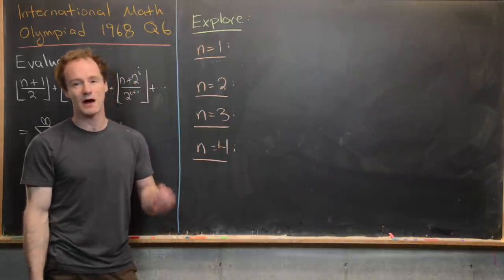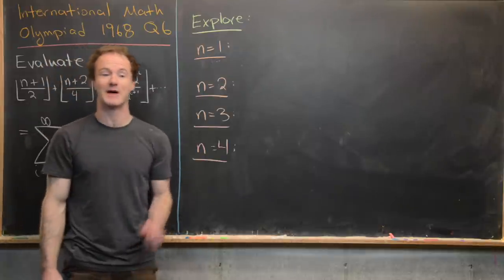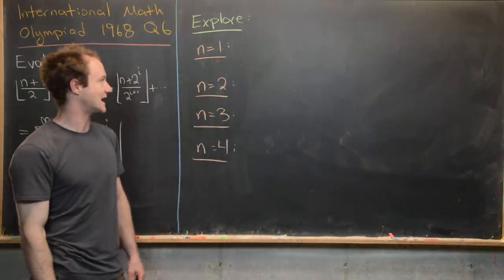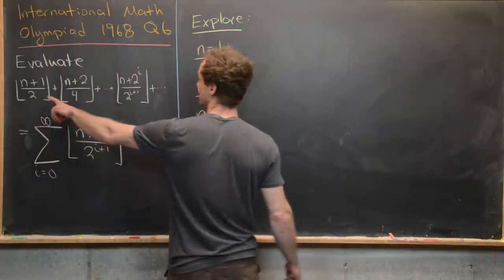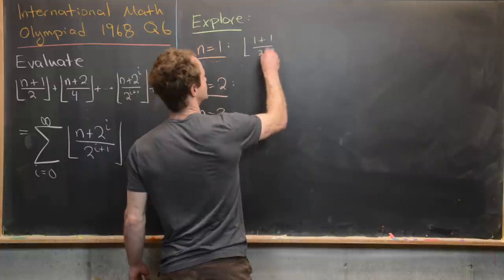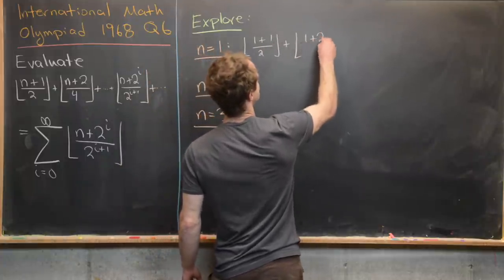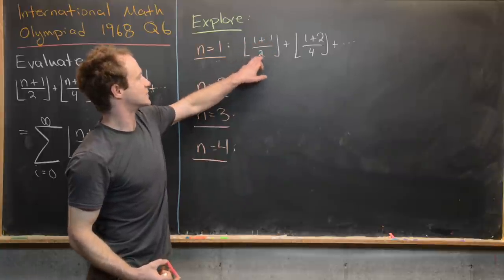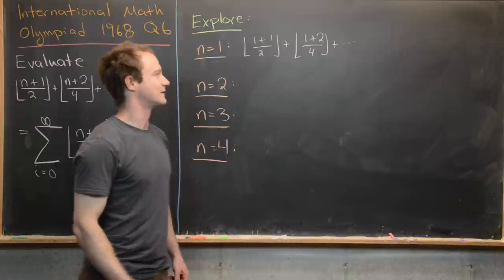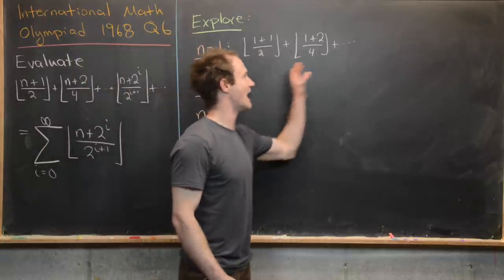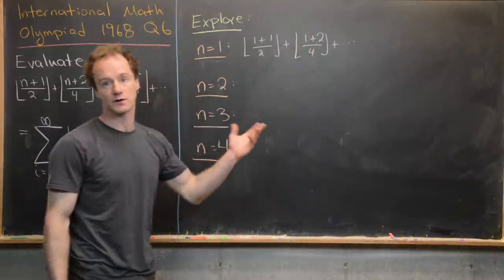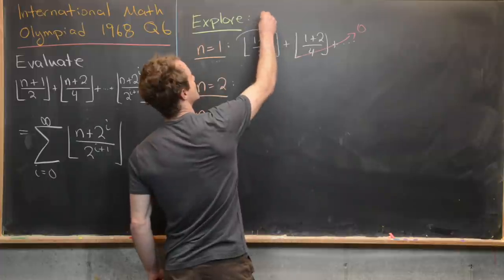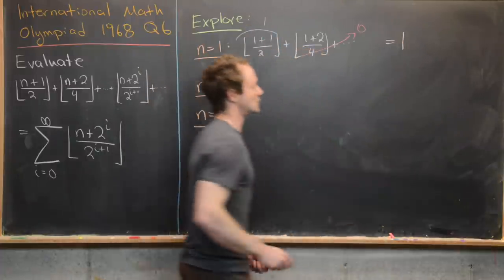Now we're going to look at the solution, starting with some exploration so we can guess the closed form. For n = 1, we have the floor of (1+1)/2 plus the floor of (1+2)/4 plus dot dot dot. The first term is the floor of 1, which is 1. The floor of 3/4 is 0, and everything past that is also 0. So the whole sum equals 1.